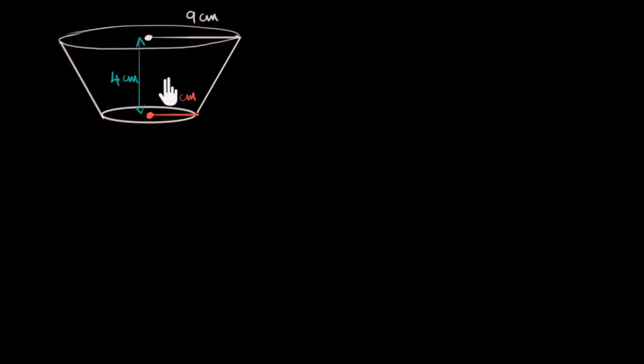We need to find the surface area of this shape that we have over here. It's called the frustum of a cone. I like to just call it a bucket or a tumbler because that's the shape really. Large circle, small circle, connected this way.